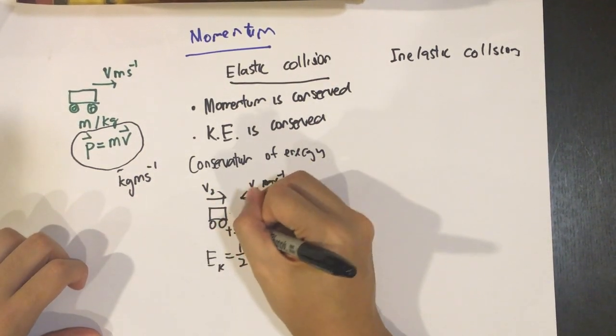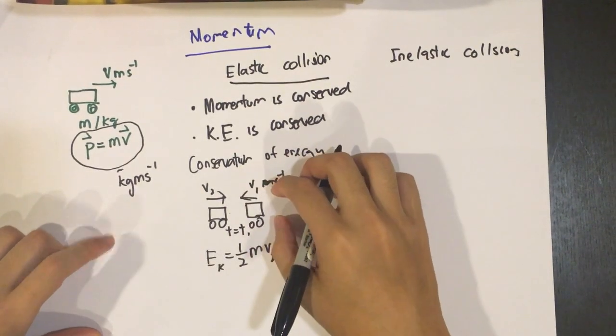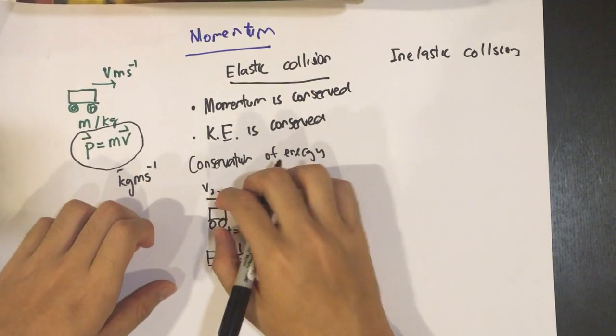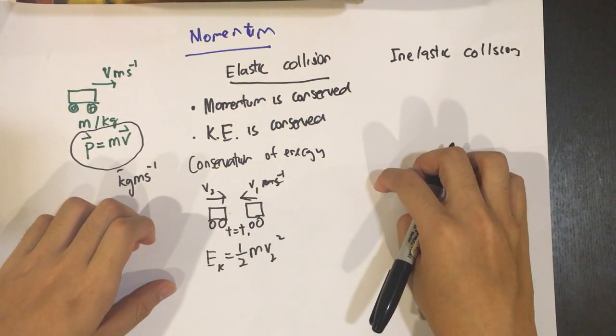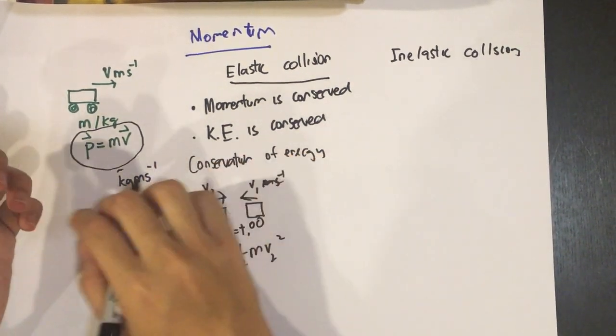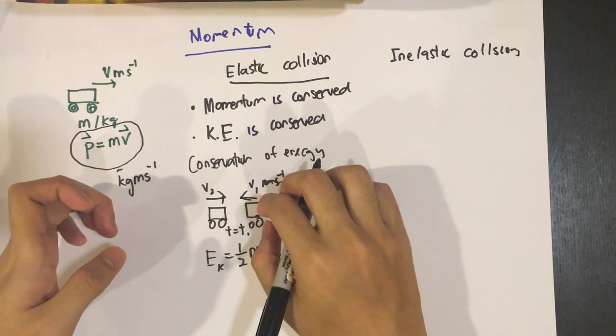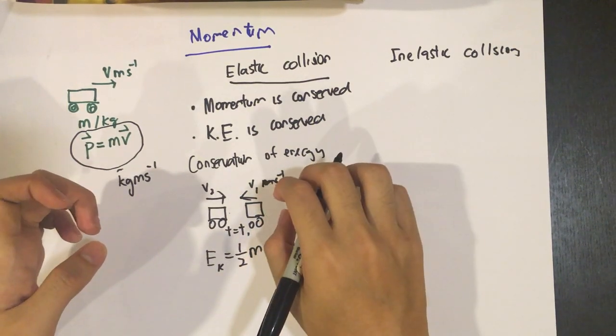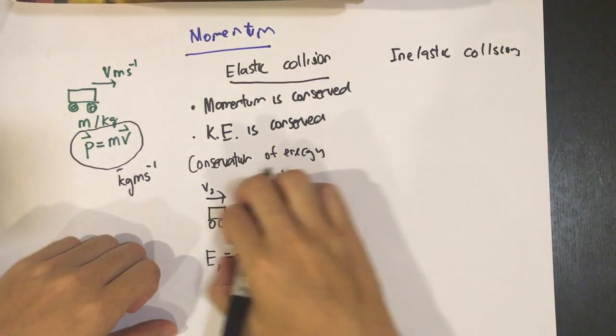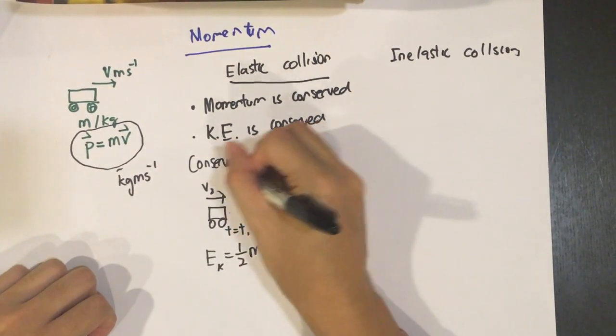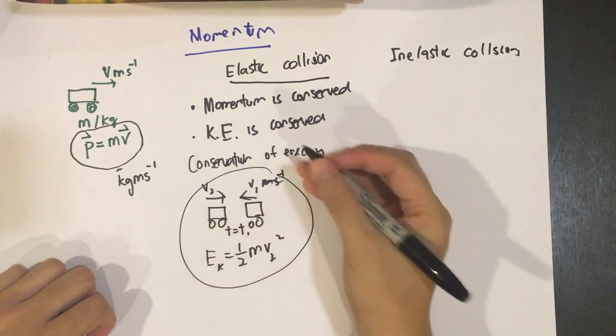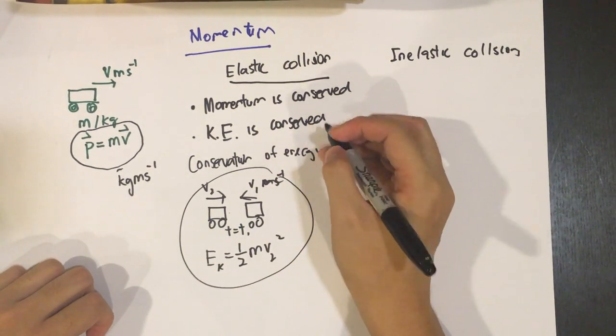Suppose the collision happens right at this moment, T equals T1 at this moment. And then when they collide, the energy is going to transmit to here and reflect it off. Or say, if the mass of this car would be heavier, then it would go the other way, given that the kinetic energy is larger for this side. So the direction should go this way. So that is for elastic collision.